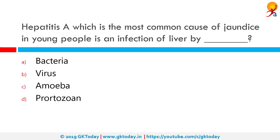Hepatitis A, which is the most common cause of jaundice in young people, is an infection of the liver by virus. Hepatitis A is an infectious disease of the liver caused by hepatitis A virus (HAV). Many cases have few or no symptoms, especially in the young. When symptoms occur, they typically last eight weeks and may include nausea, vomiting, diarrhea, jaundice, fever, and abdominal pain.